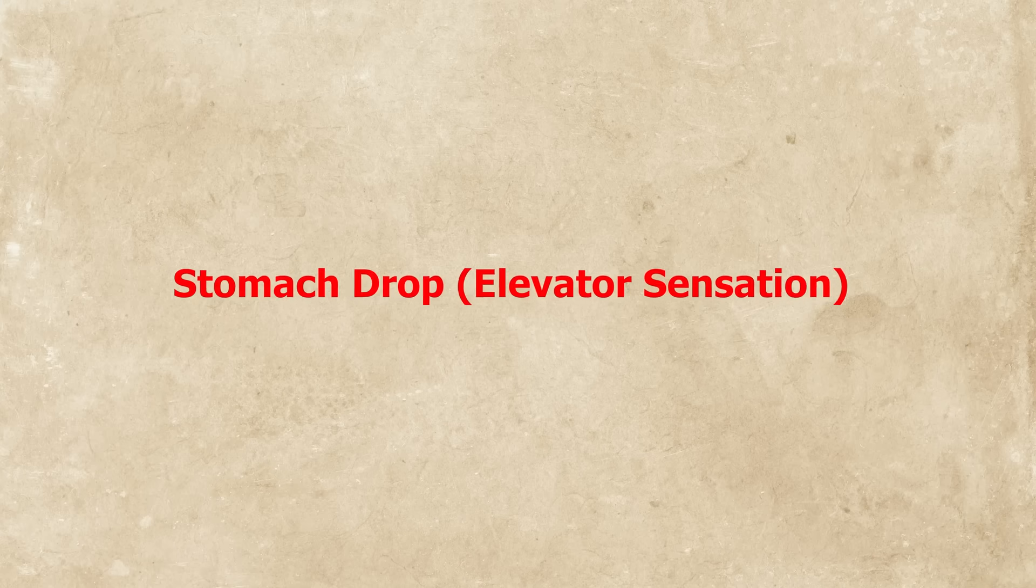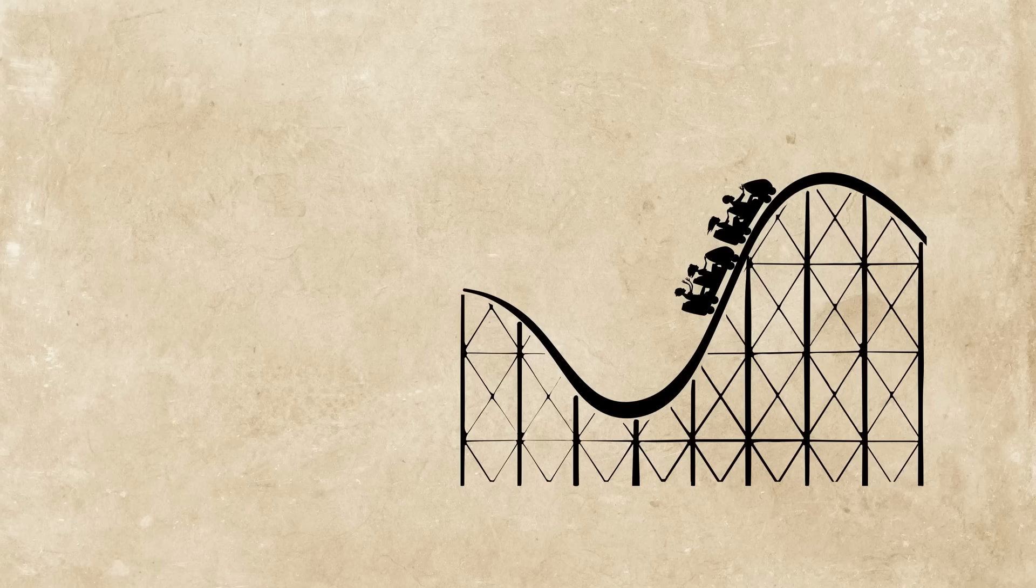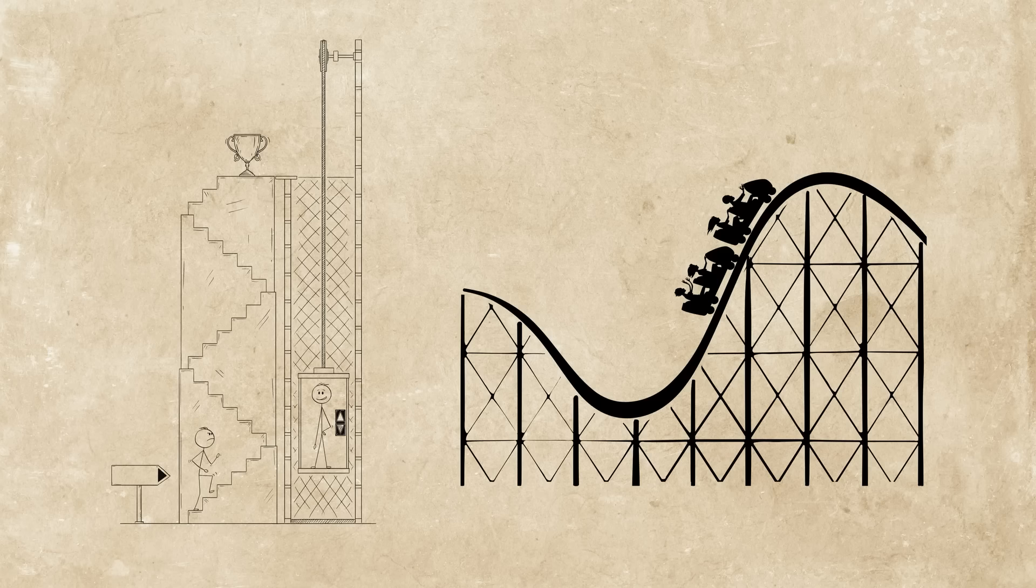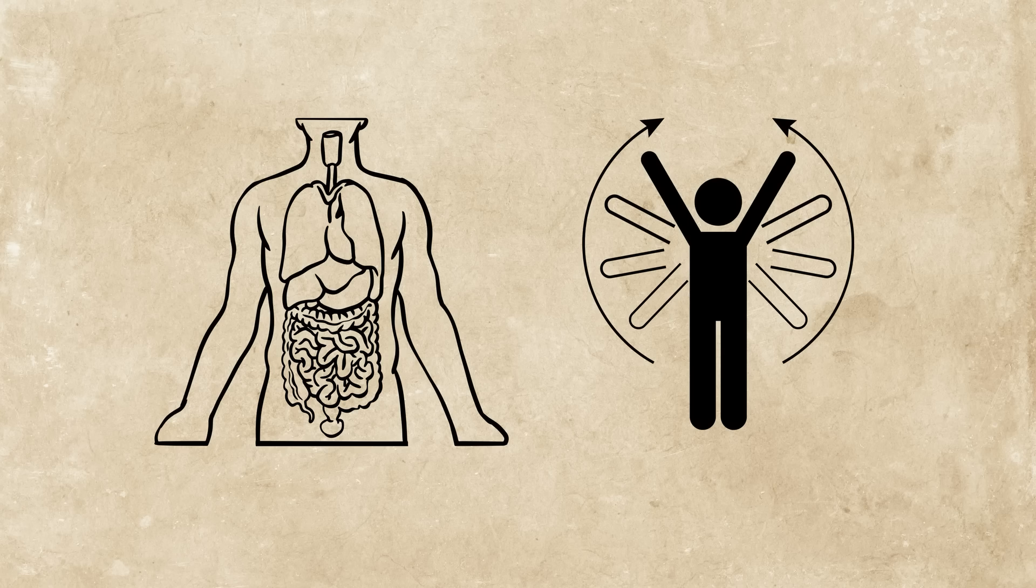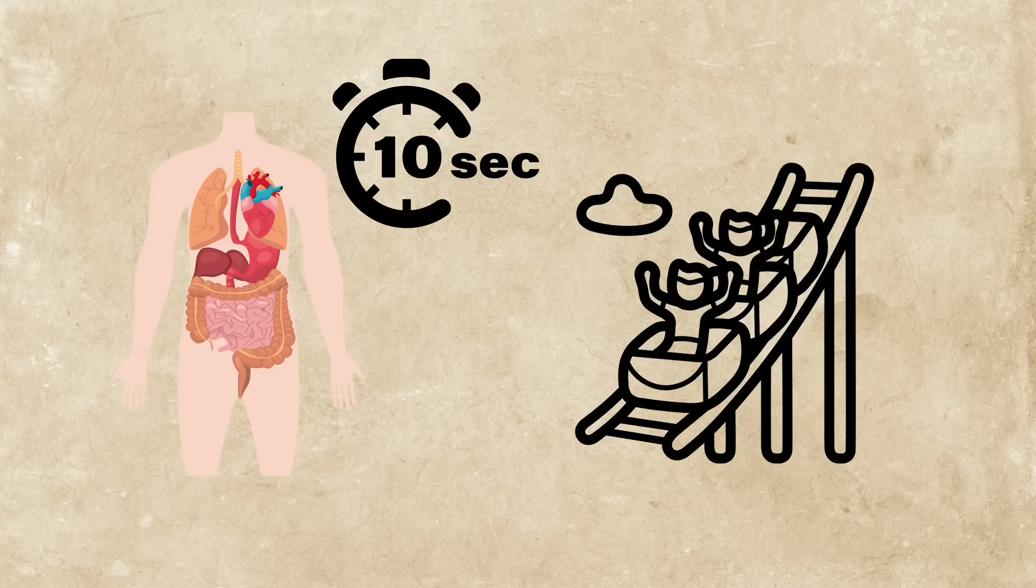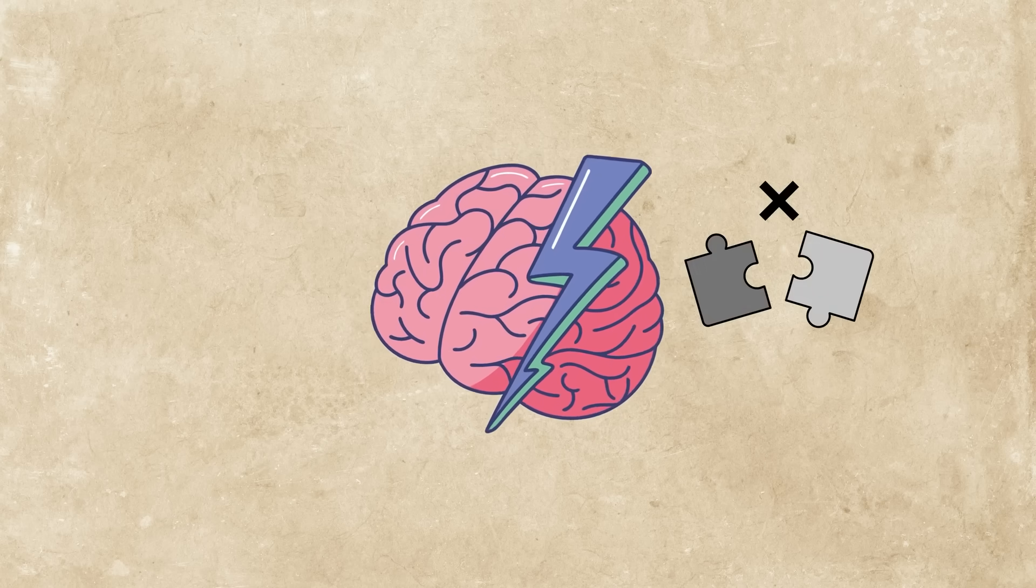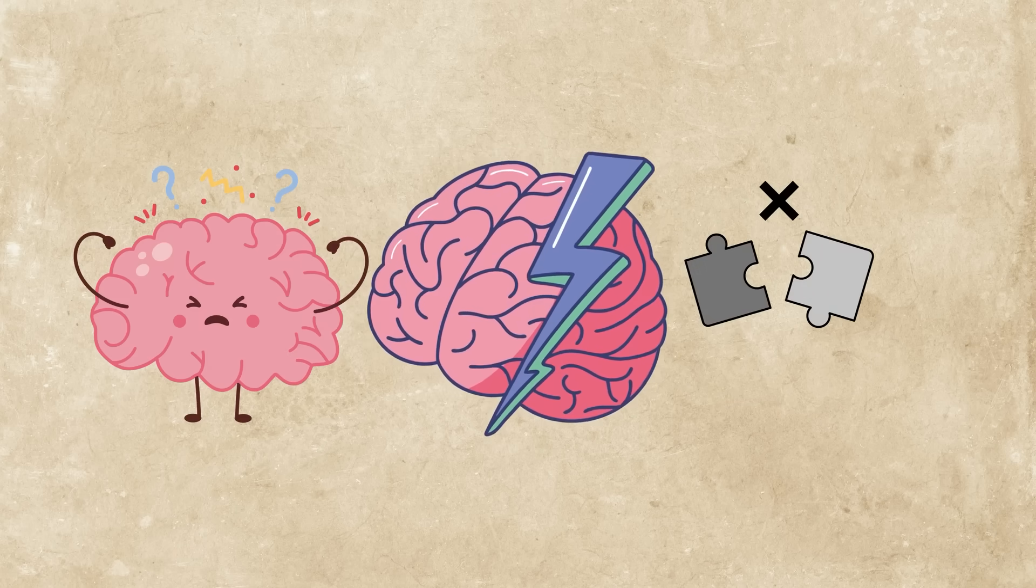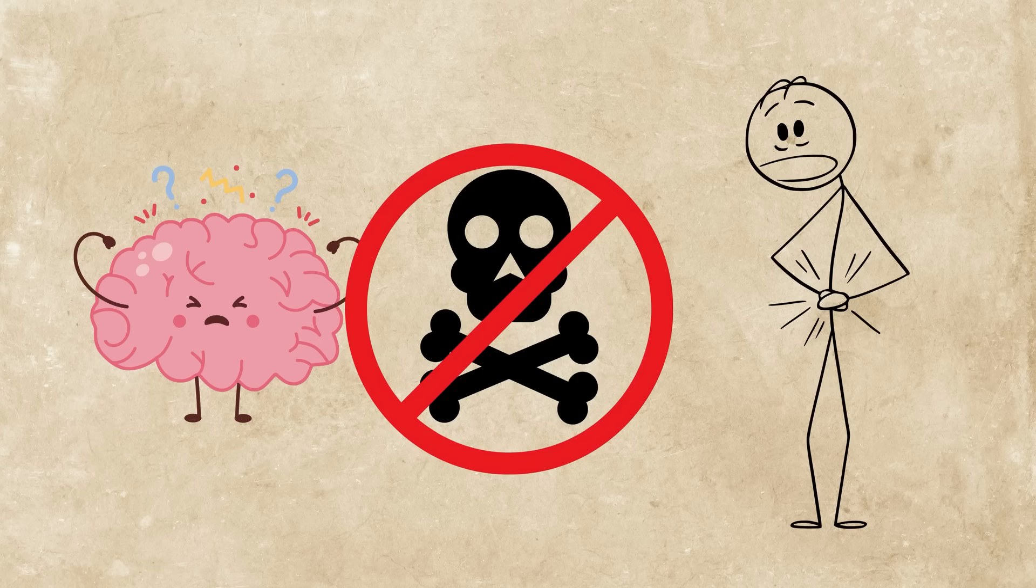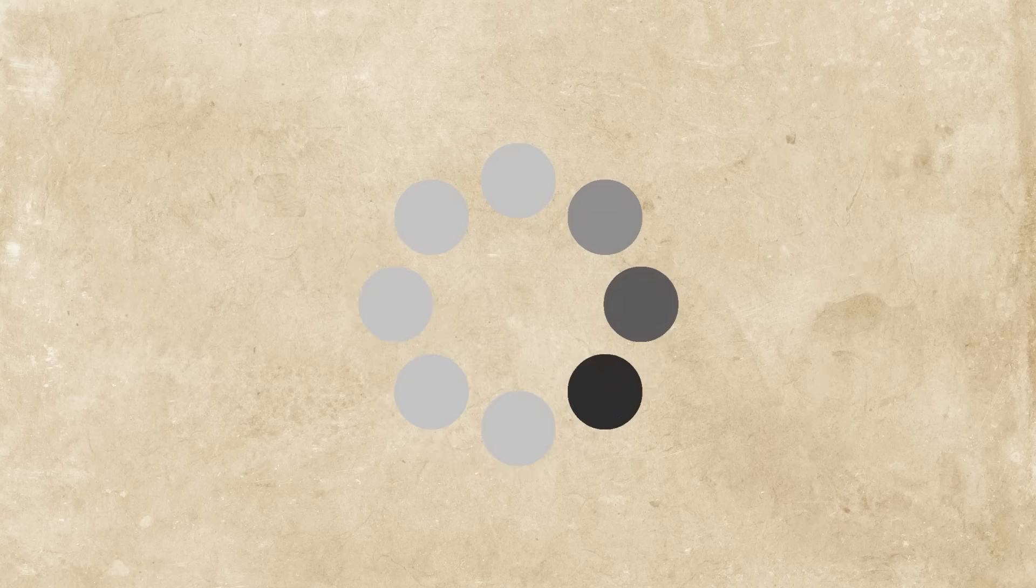Stomach drop, or elevator sensation. That weird flutter when a roller coaster drops or an elevator moves fast, that's your organs reacting to sudden motion. Your body moves quickly, but your internal organs take a split second to catch up. Your brain senses the motion mismatch and fires off a gut-level reaction. No danger, just an internal lag that tricks your brain into thinking something's off. It's like motion buffering.